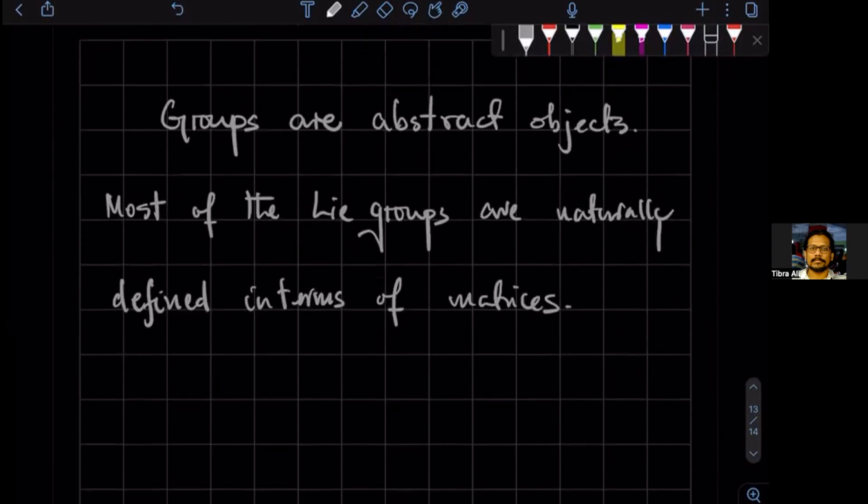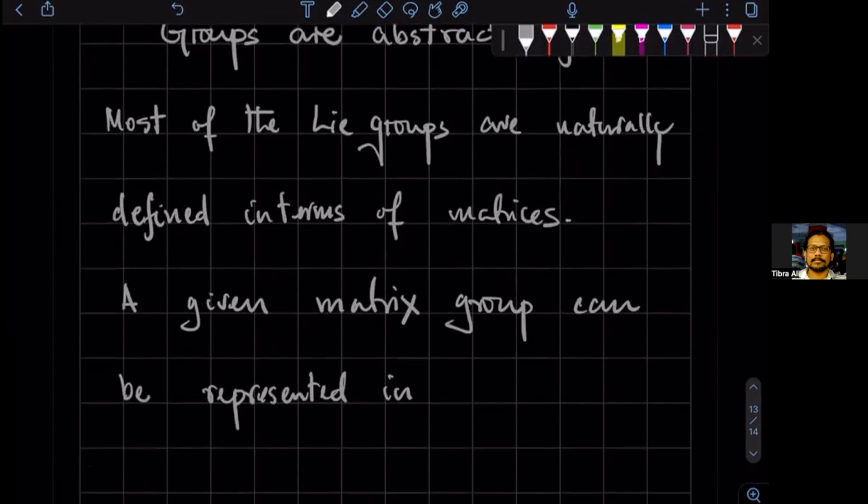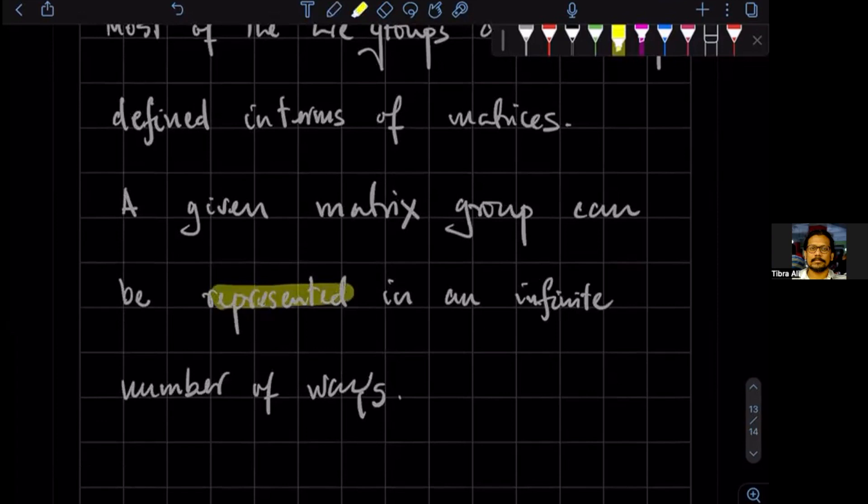Not only that, a given matrix group can be represented in an infinite number of ways. So I've just introduced the word 'represented' - this is actually a very important word in group theory. These matrix representations...